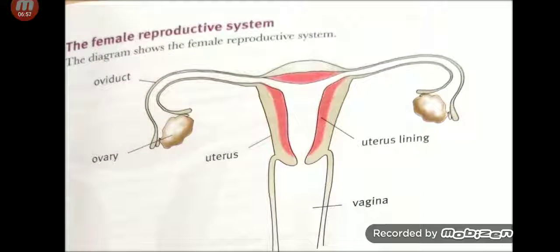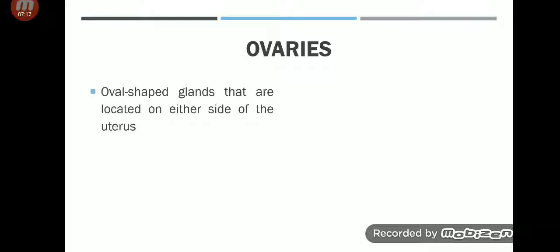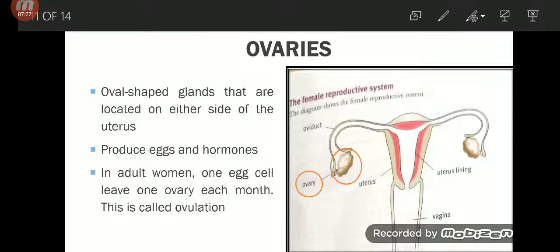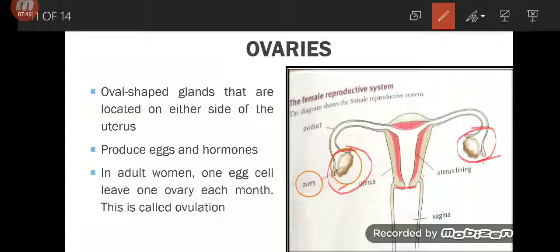This is a picture of the female reproductive system from your book. It shows the oviduct, uterus, uterus lining, and vagina. Just like the male reproductive system, we will study each part and its function. Number one we have the ovaries — oval-shaped glands located on either side of the uterus. In this picture you can see the oval-like glands on either side of the uterus.